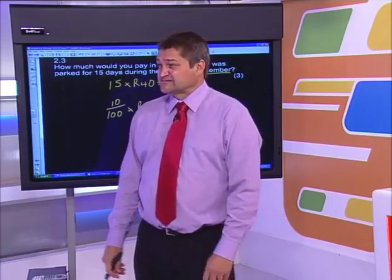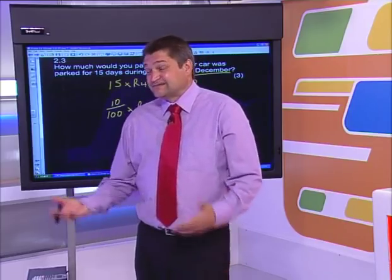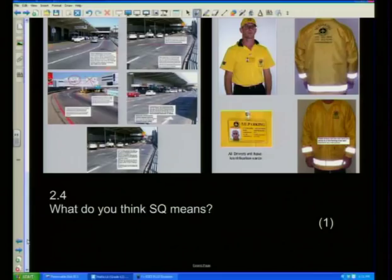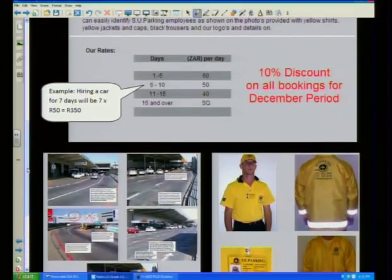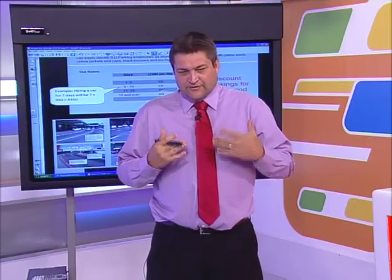540 rand — that's quite expensive just to park a car for 15 days, though it's probably still cheaper than airport parking. Next question: what do you think SQ means? Looking at the rates: 1 to 5 days = 60 rand, 6 to 10 = 50, 11 to 15 = 40, and 16 and over = SQ. Basically, SQ means the price is going to vary — it's not a fixed price.